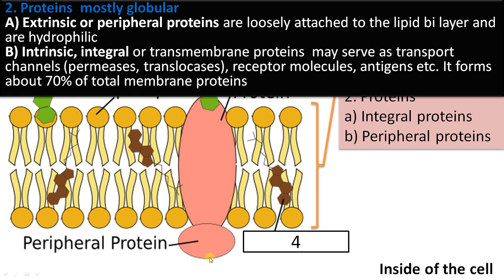Whereas extrinsic proteins or peripheral proteins are often seen on the outside, loosely attached and hydrophilic. They may be on the inner side or the outer extracellular side, and these proteins can be easily dislodged without harming the structure of the plasma membrane.